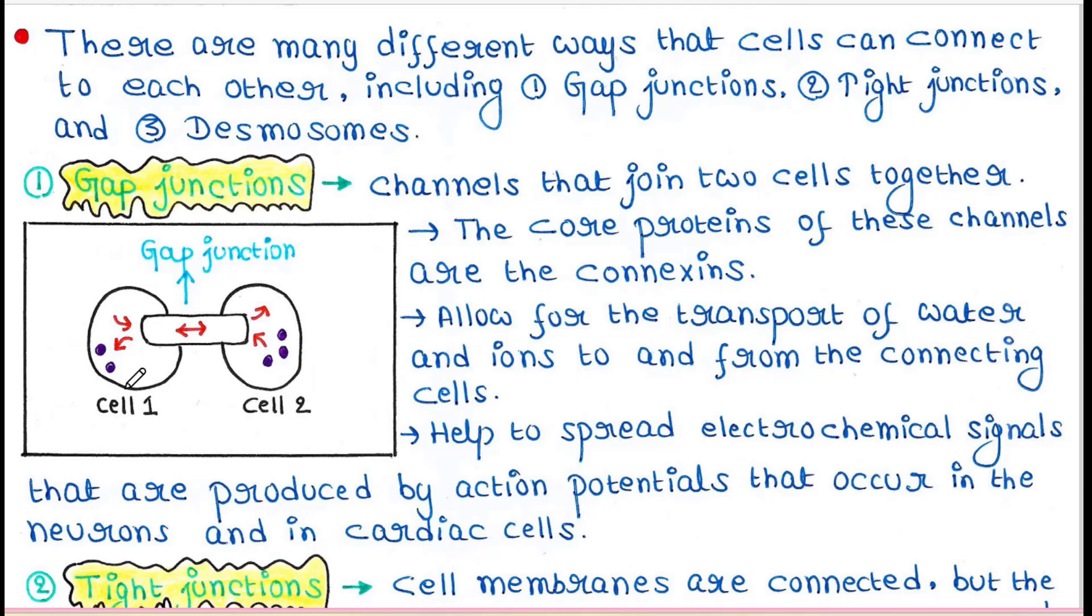They help to spread electrochemical signals that are produced by action potentials that occur in the neurons and in cardiac cells. Gap junctions are mainly found in cardiac cells and neurons, where the cytoplasmic materials are exchanged between two or more cells.